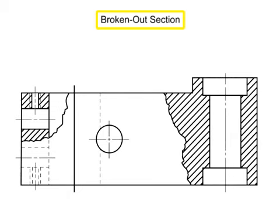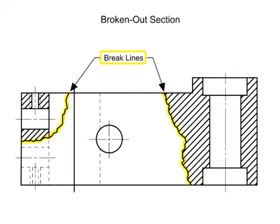Broken out sections are used to show the interior details of a specific feature of the object. A small portion of the part is sectioned to show interior details. A freehand brake line is used in lieu of a cutting plane line to indicate a broken out section. Typically, hidden lines are omitted from the broken out section view. Additionally, the section is not shown in a separate view. Instead, the original part is drawn as normal and the section appears in the regular view.